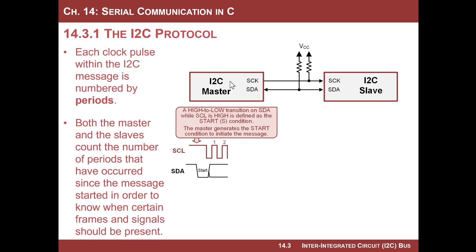Each clock pulse within a message is numbered, and there are predetermined numbers associated with each clock pulse. This is important when reading data sheets — they'll say things like 'in period 18 you'll see this bit' or 'periods 9 through 28 show this.' The master and slave essentially count clock pulses, and they know where they are in the message and what should be happening at that particular period.